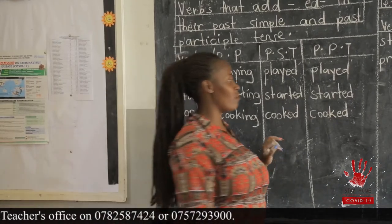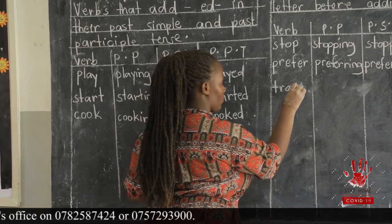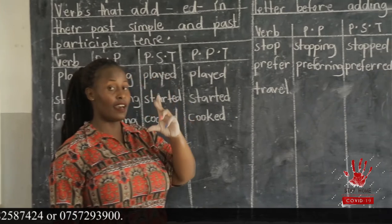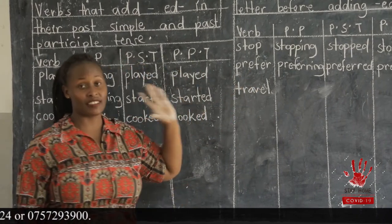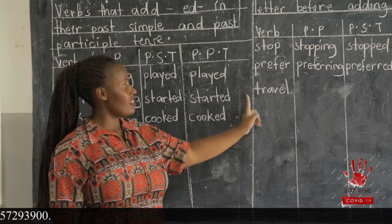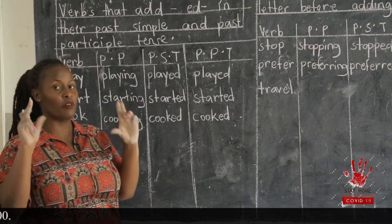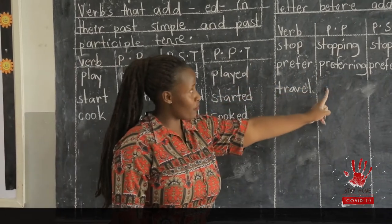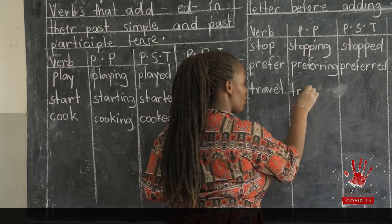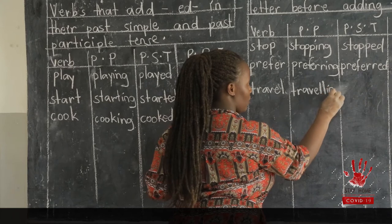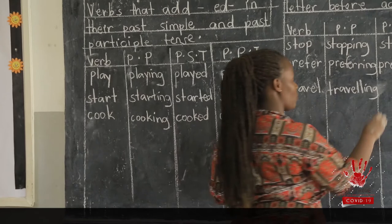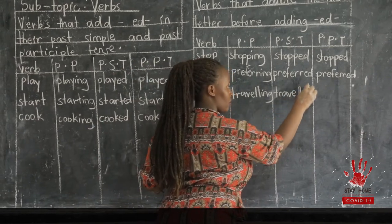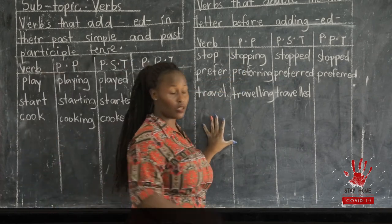Another verb example is 'travel.' Children, if you are observant, you can see that all the words here that double the last letter have an ending syllable — that is why we double it. The words stop, prefer, and travel all end with a vowel and consonant, forming a stressed syllable. When changing 'travel' to the present participle, we double the last letter and it becomes 'travelling.' In the past simple and past participle, we double the L and add ED, giving us 'travelled.'